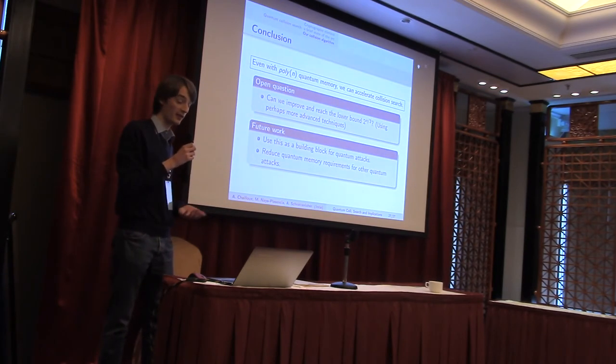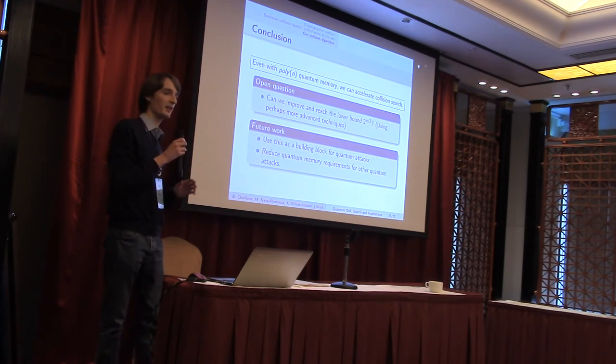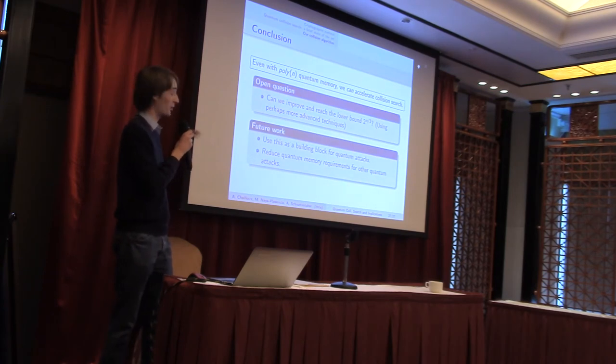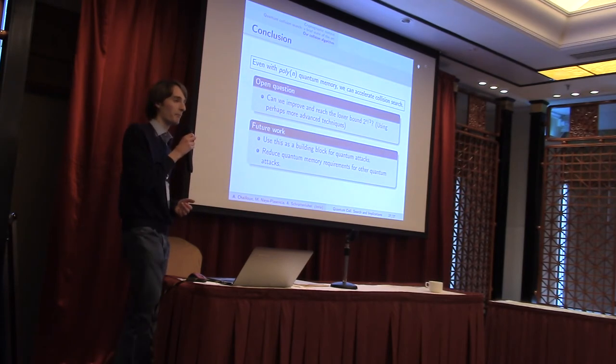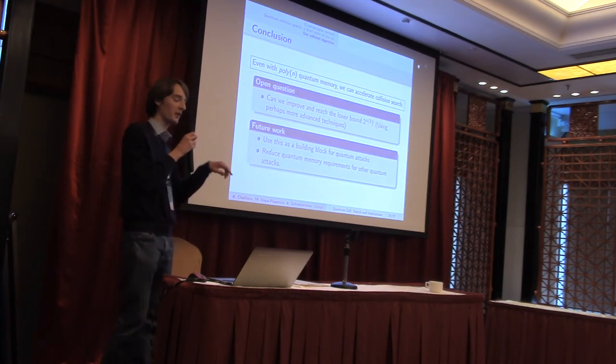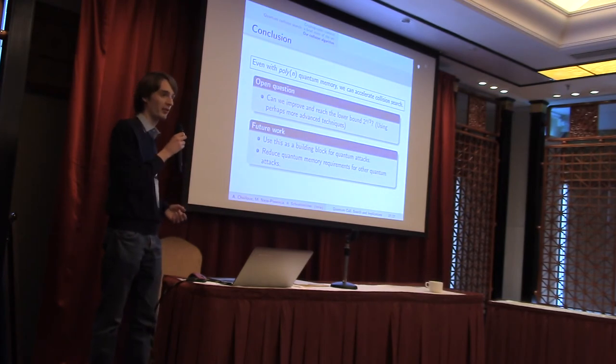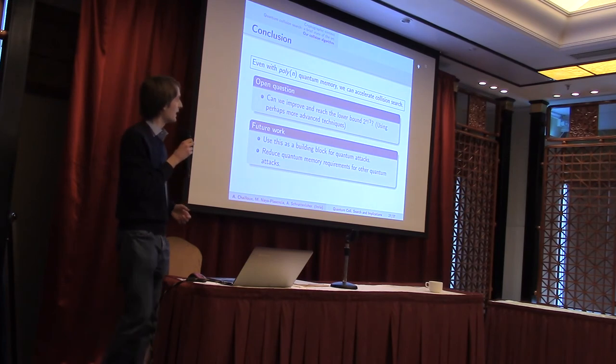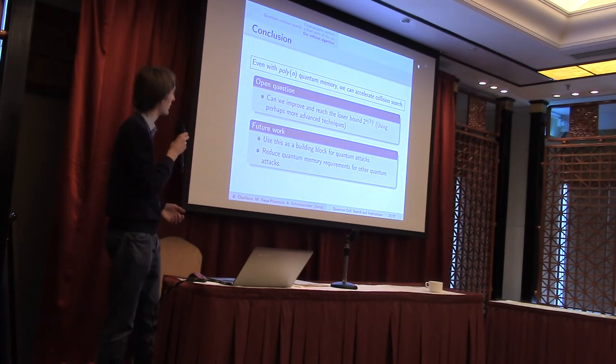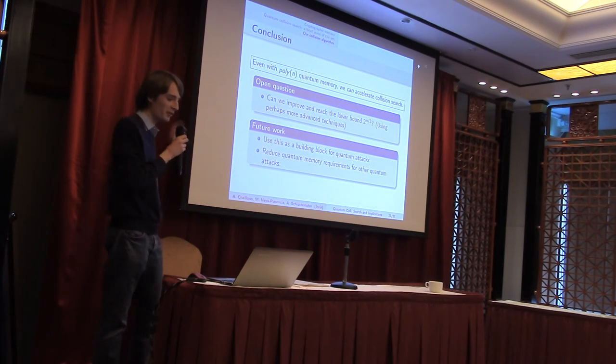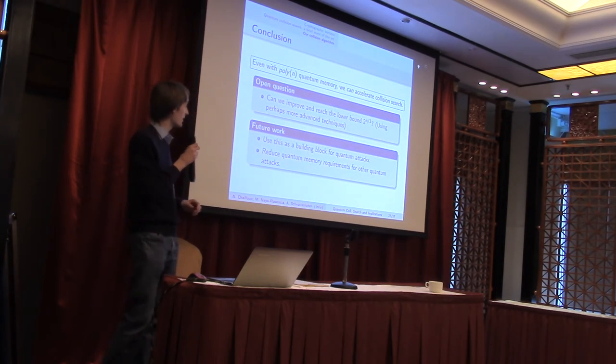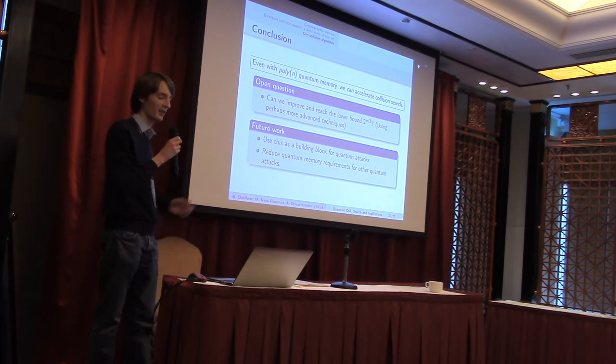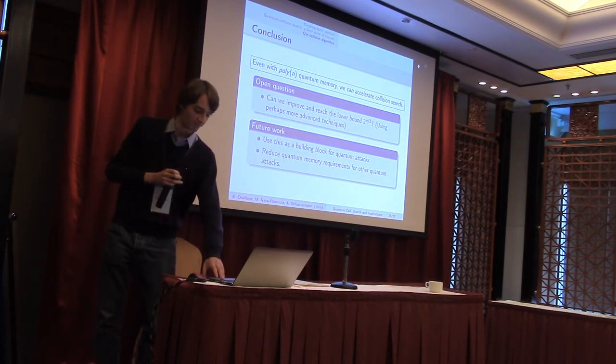So what do we do? Basically, we know that we can accelerate collision search in a quantum setting even with a restricted quantum memory, a polynomial quantum memory as in Grover's algorithm. The question is now, are we doomed to stay at this 2n over 5 exponent? Or can we reach the lower bound 2 to the n over 3 using perhaps more advanced techniques? We looked at quantum walks, but for example, quantum walks use large amounts of quantum memory. So they weren't of any help so far. We also plan on using this algorithm as a building block for more intricate quantum attacks. And perhaps also use similar methods to reduce quantum memory requirements for other types of attacks.